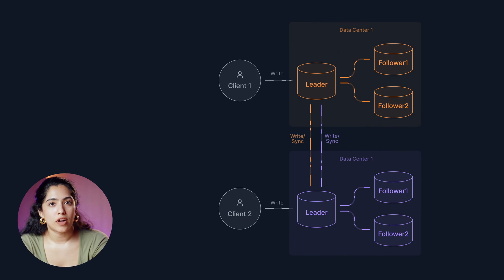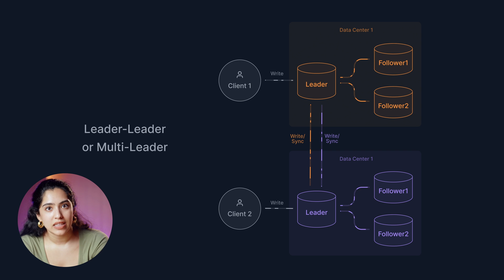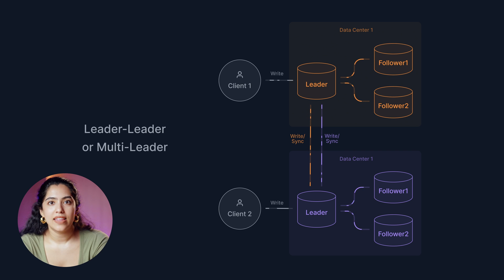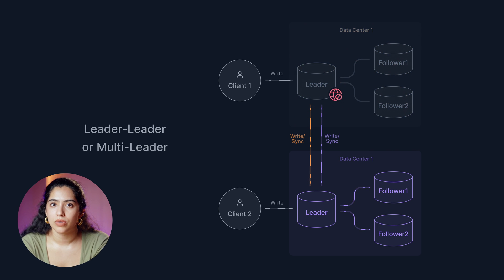Our next strategy tweaks leader-follower by designating more than one leader in the system. This is called leader-leader, or multi-leader, and it's a simple way to mitigate leader failure. In this strategy, more than one database is available to take writes, meaning if one leader goes down, the other can step in. In order to figure out which one steps in, we use different types of consensus algorithms to elect a new leader. The most common consensus algorithm is Paxos. This multi-leader strategy does introduce a slight lag as data must be replicated to multiple leaders, and engineers need to deal with that complexity, especially when discrepancies arise between leaders. But the added durability mostly outweighs the cons.